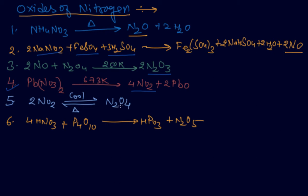The fifth oxide is important. A useful trick: P4O10 reacts with nitric acid and gives N2O5. Balancing is your task — please be careful and balance it yourself. N2O5 is a colorless solid and acidic. Now I will draw some structures: N2O5, N2O4.